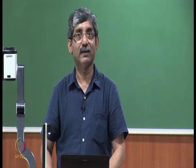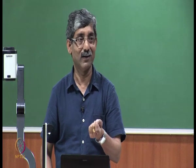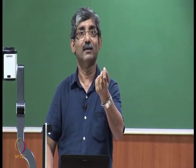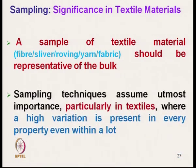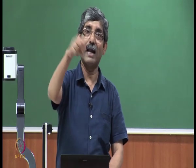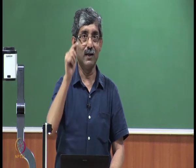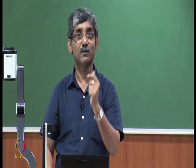Sampling significance in textile material: the only reason sampling is important is that the sample of textile material — fiber, sliver, roving, yarn, fabric — should be representative of the bulk. Sampling technique assumes utmost importance because textile material is highly variable in nature. For other products of specific shape, sampling is not that important, but in textile material, being highly variable, we must follow a specific sampling technique.